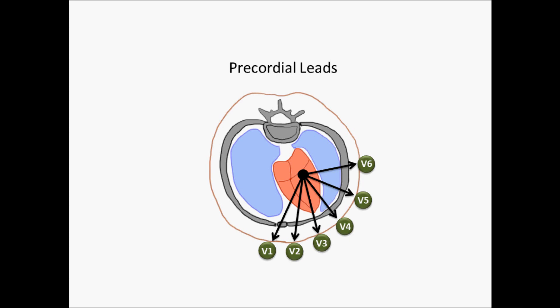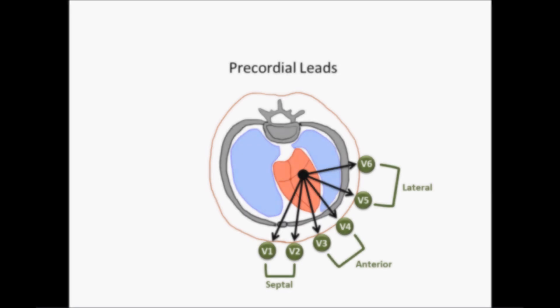And these are leads V1 through V6. We call these the precordial leads. Now, remember, the heart is rotated, and this drawing isn't completely anatomically correct. But V1 and V2 are really looking at the septum. V3 and V4 are looking at the anterior wall of the left ventricle, and V5 and V6 are showing you the lateral wall of the left ventricle.